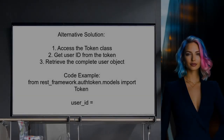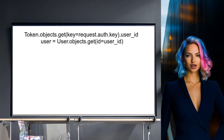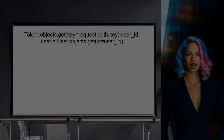An alternative approach to retrieving the user object from a token string involves directly accessing the token class. First, you can get the user ID associated with the token. Then, you can use that ID to fetch the complete user object, including any computed properties.